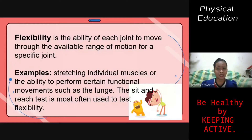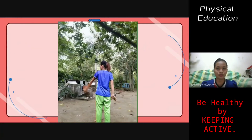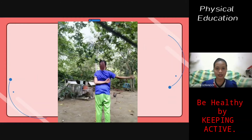Flexibility is the ability of each joint to move through the available range of motion for a specific joint. For example, stretching individual muscles or the ability to perform certain functional movements such as the lunge. The sit-and-reach test is most often used to test your flexibility. The video demonstrates a flexibility stretch.